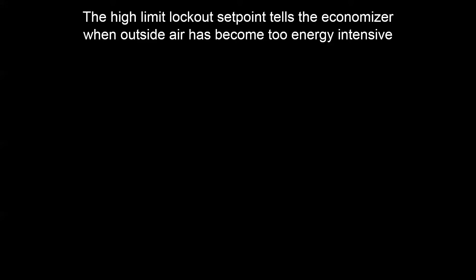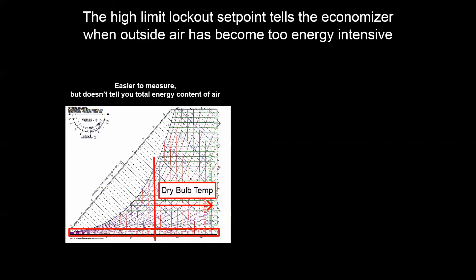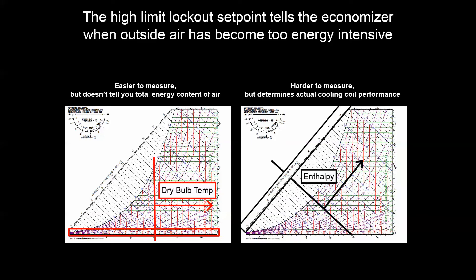The reason we discussed psychrometrics was for moments like this. How can we control an economizer? It boils down to two variables: dry bulb temperature — using sensors that are dependable with low inaccuracy — or enthalpy, which captures true energy content but is harder to measure and carries more potential inaccuracy.